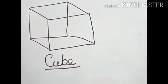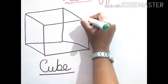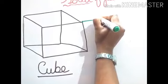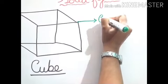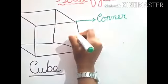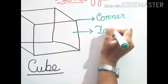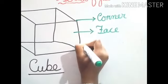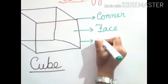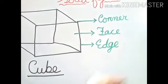Okay, now again, we will label the figure. This one, same as like cuboid. Corner. This one, face. And this one, edge.